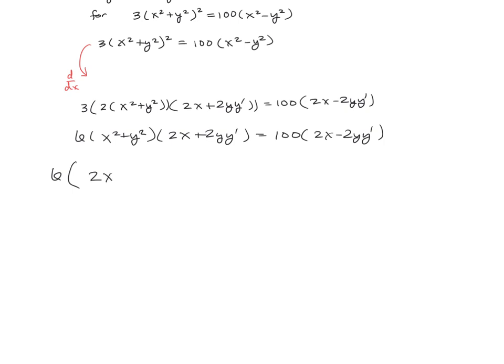And then for the outside, we're going to have 2x²y y prime. For the inside, we're going to have 2xy². And then for our last term from the expansion, we're going to have a total of 2y³ y prime, and that's going to be 100 times our 2x minus 2y y prime.